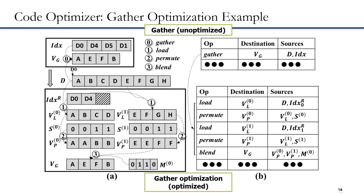For the code optimizer, we use a gather optimization example for illustration. The figure illustrates gather optimization applied based on derived features, assuming vector length is 4 and bit width of the permute vector is 2. We use two load-permute-blend operation groups to replace one gather operation, where the first load reads D0 and D1 and the second reads D4 and D5. Therefore, NR equals 2 and permutation addresses S0 and S1 both equal 0011. We first load data ABCD and EFGH to registers, then based on S0 and S1 obtain AABB and EEFF with permute operations. After that, we apply the blend operation with mask 0110 to obtain AEFB.